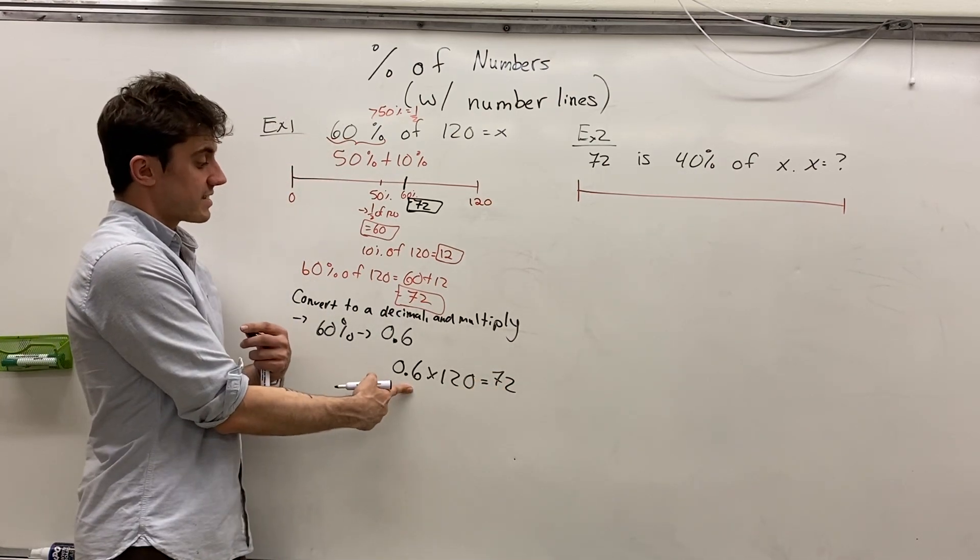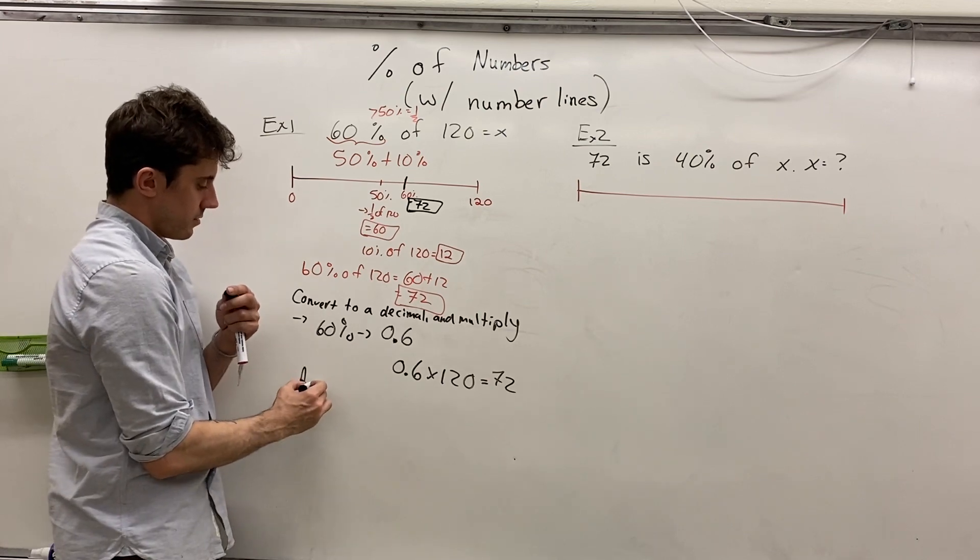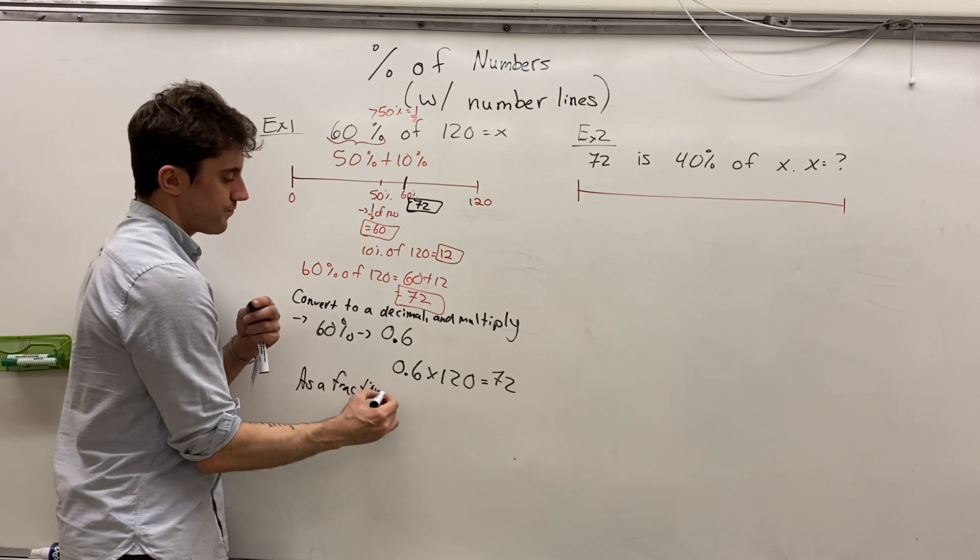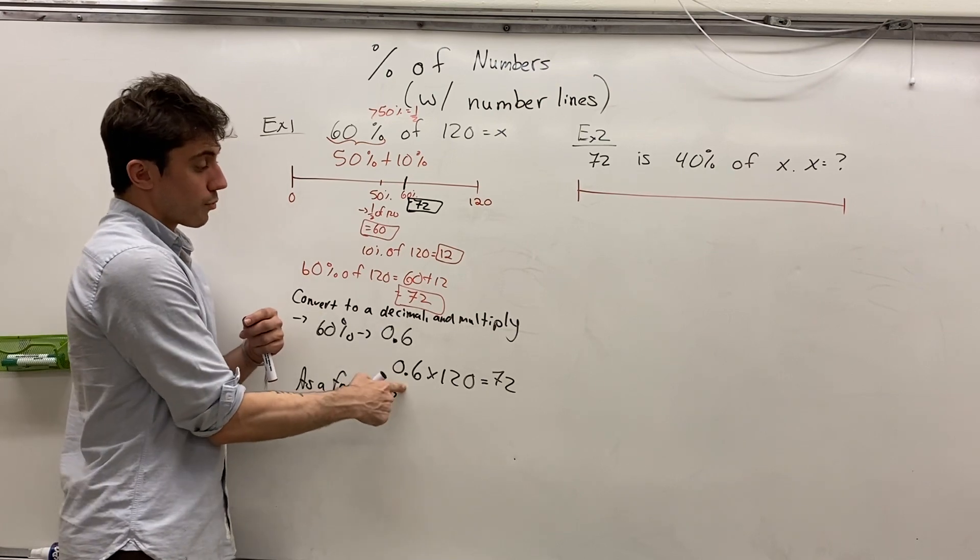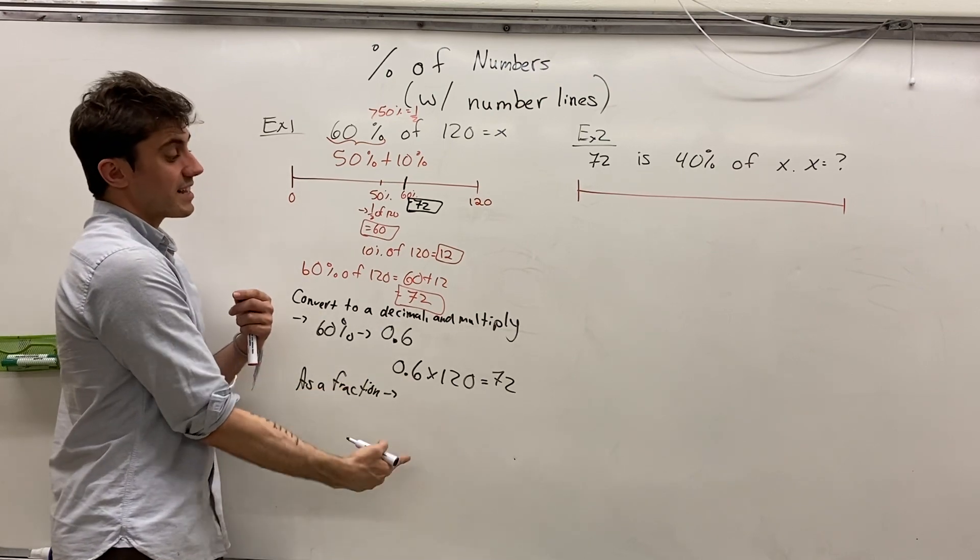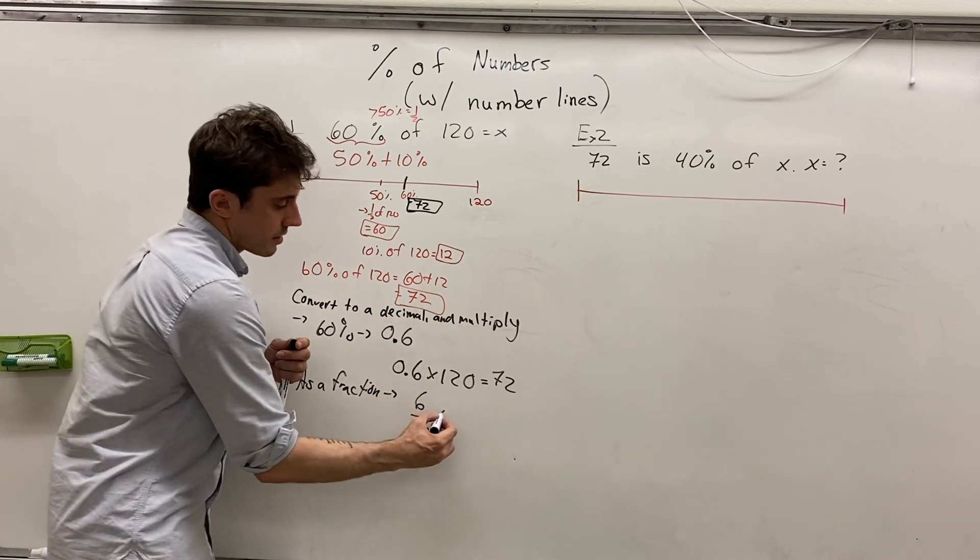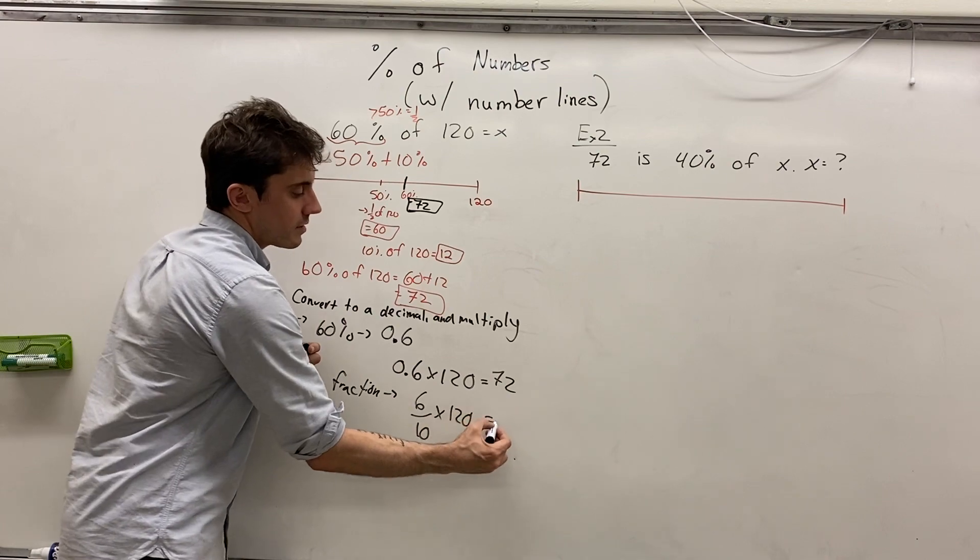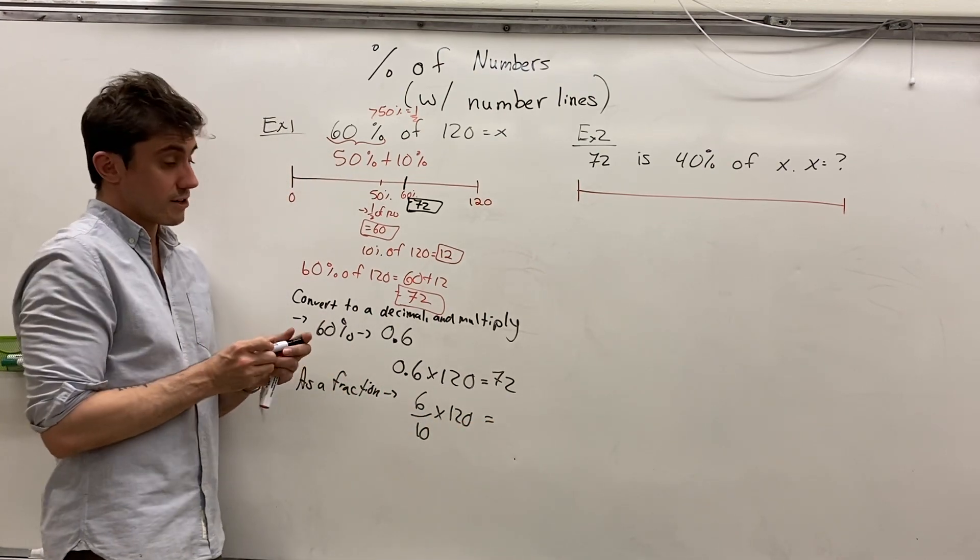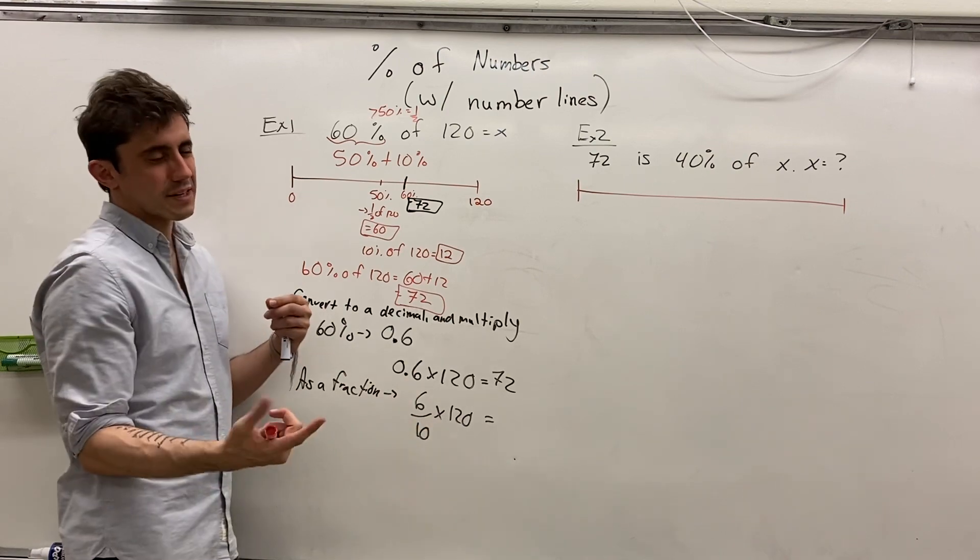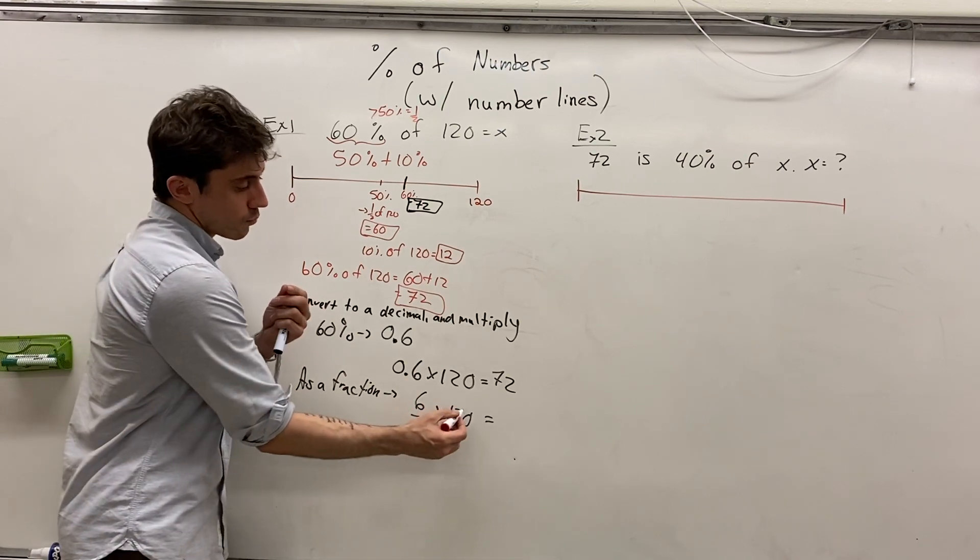Another way is you can write six tenths as a fraction. 0.6 is simply 6 in the tenths place. So naturally as a fraction, we can write that as 6 tenths times 120. And this is a good review of multiplying fractions. We can do 6 times 120. That's a big number. Let's divide first.